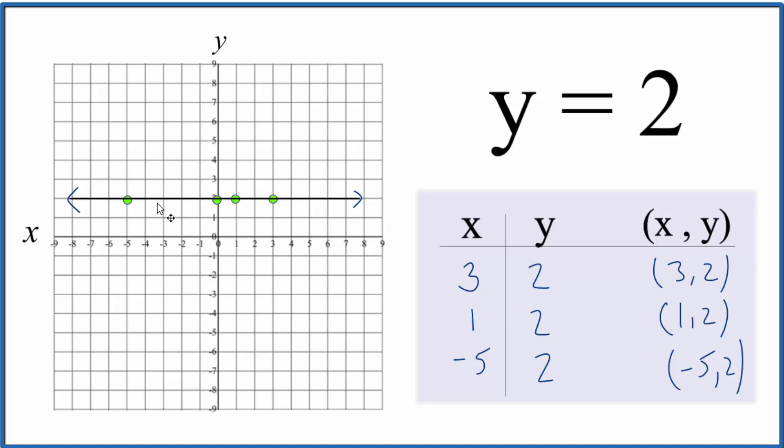Note that we cross the y-intercept at 2, right here on the y-axis, and that the slope of this line is 0. This is Dr. B with the equation for y equals 2. Thanks for watching.